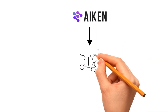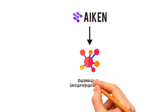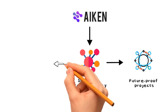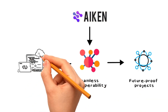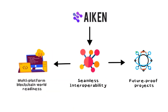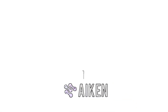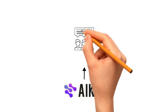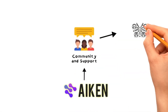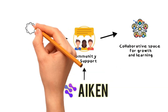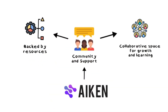Seamless interoperability: Aiken is built for the future, ensuring your projects play well with off-chain systems, preparing you for a multi-platform blockchain world. Community and support: backed by resources and a collaborative space, Aiken's community is a hotbed for shared growth and learning.